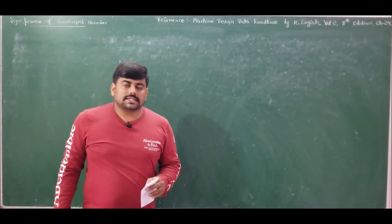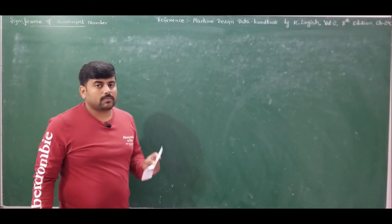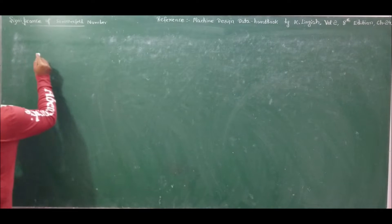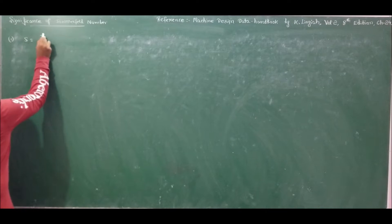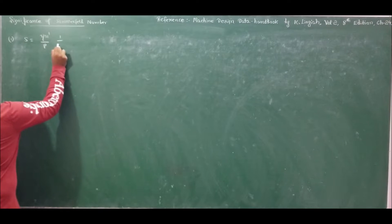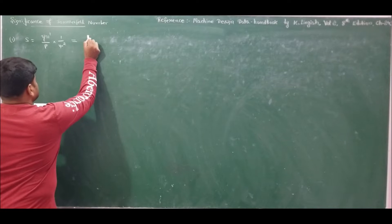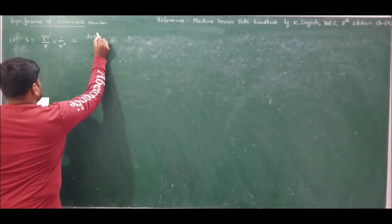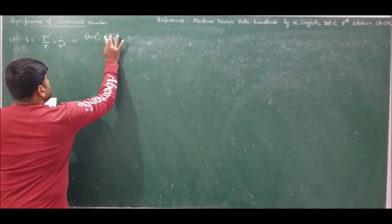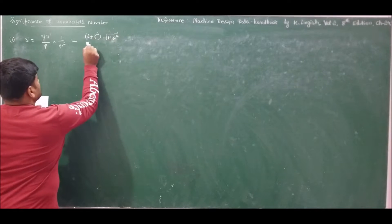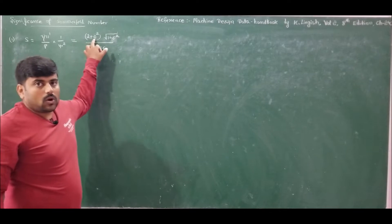To discuss the significance of the Sommerfeld number, we will make use of the Design Data Handbook by K. Lingaya, Volume 2, 8th edition, Chapter 24. From the data handbook, the equation for bearing characteristic number or Sommerfeld number is given by: S = (η·n') / p × (1/ξ²), and also expressed in terms of eccentricity ratio as: S = (2 + η²) × √(1 - η²) / (12π·ε), where ε is the eccentricity ratio or attitude.